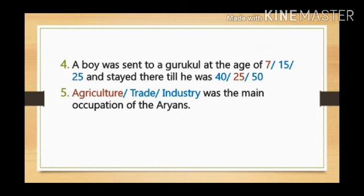Question number 4: A boy was sent to a Gurukul at the age of dash, and he stayed there till he was dash. Options for the first blank are 7, 15, and 25 — the correct answer is 7. When a boy was 7 years old, he was sent to a Gurukul, i.e. the house of the teacher or Guru, to receive education. Options for the second blank are 40, 25, and 50 — the correct answer is 25.